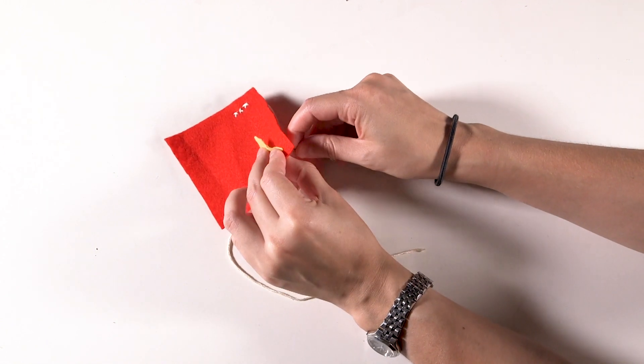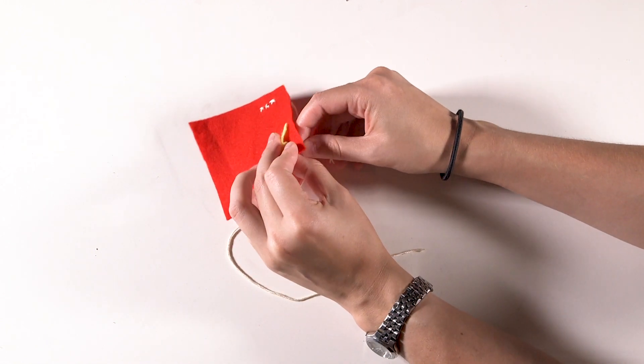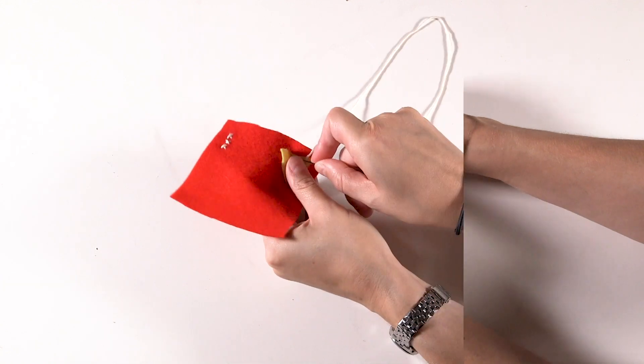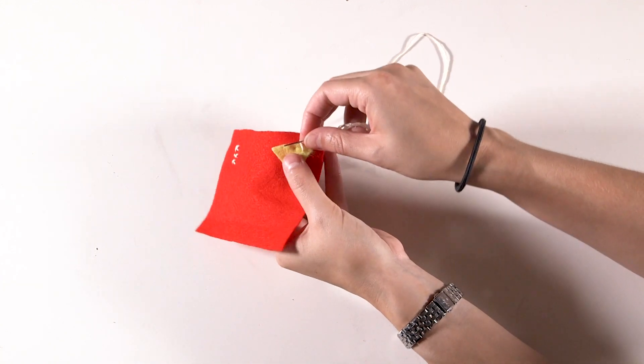Then, using cross stitch or running stitch, sew around the edge of the shape to attach it to your material. I'd suggest that running stitch is the easier of the two to use.